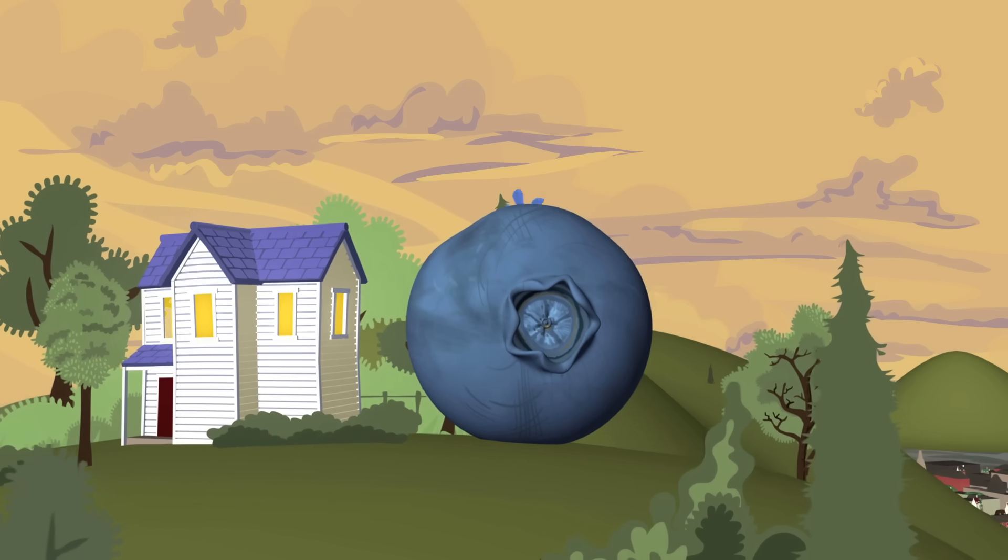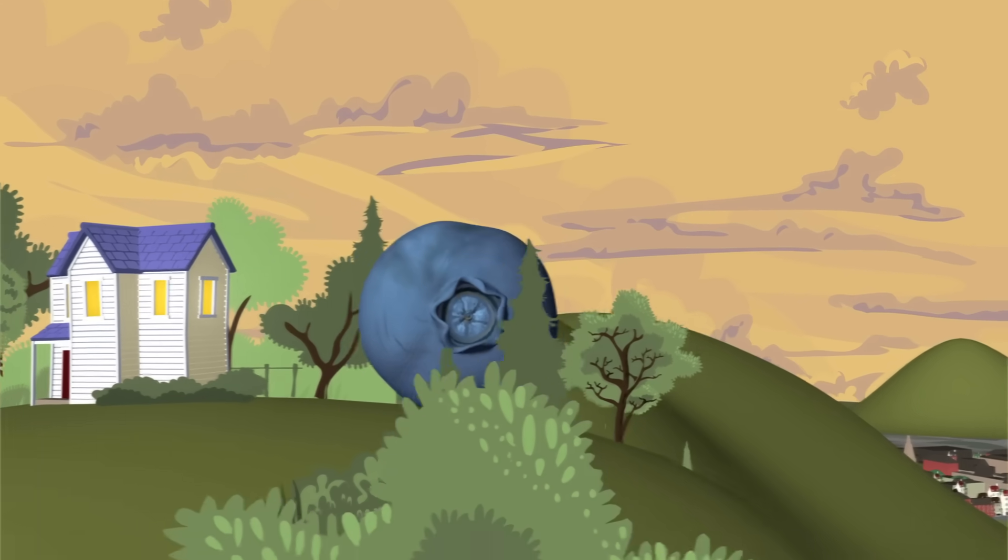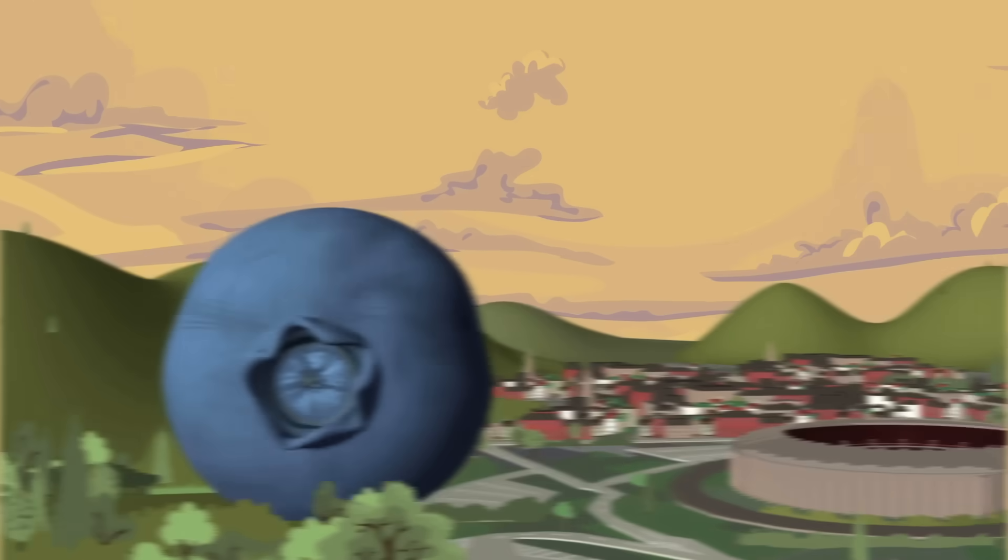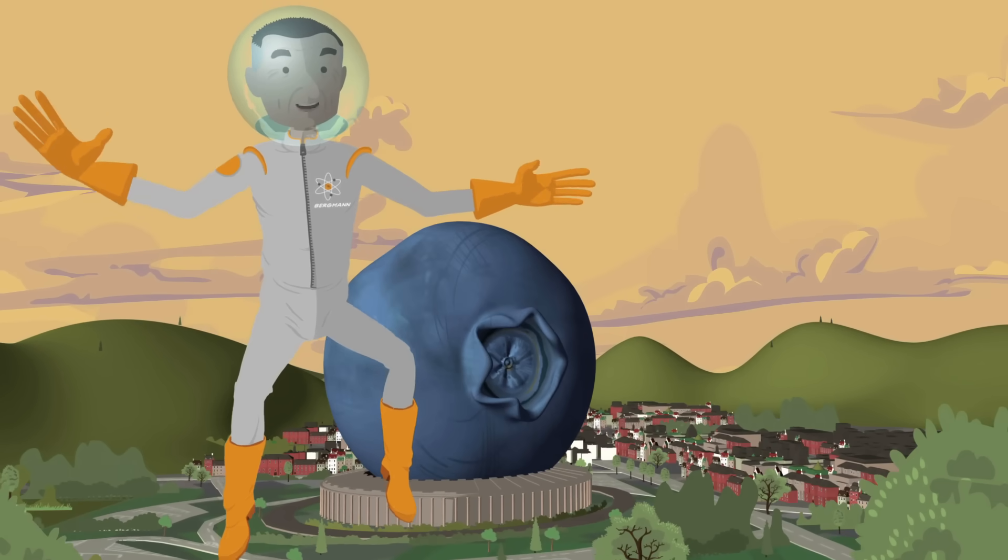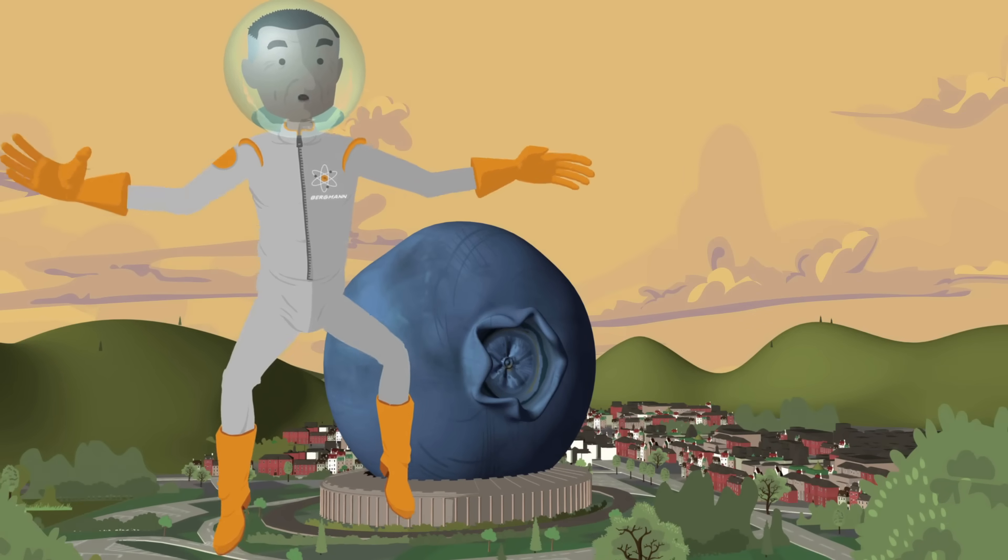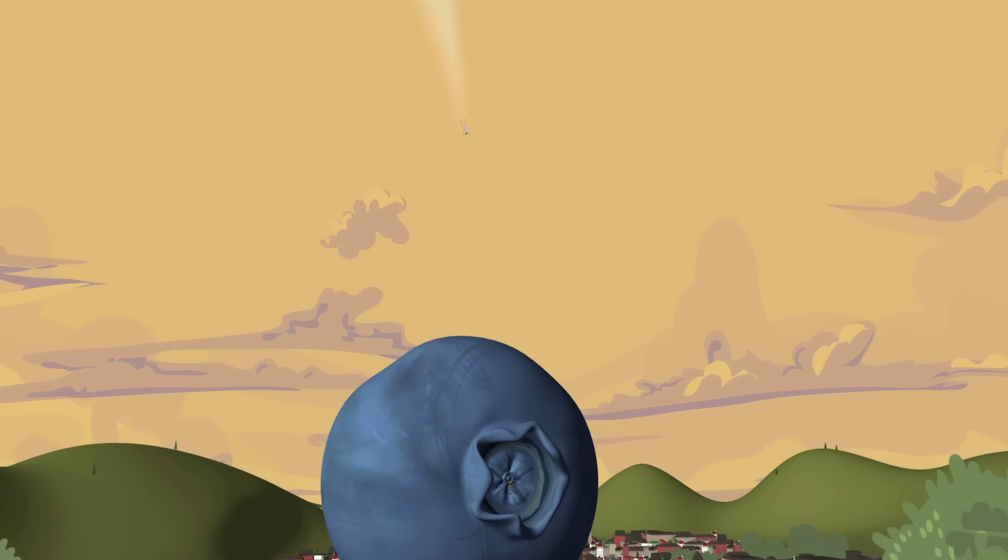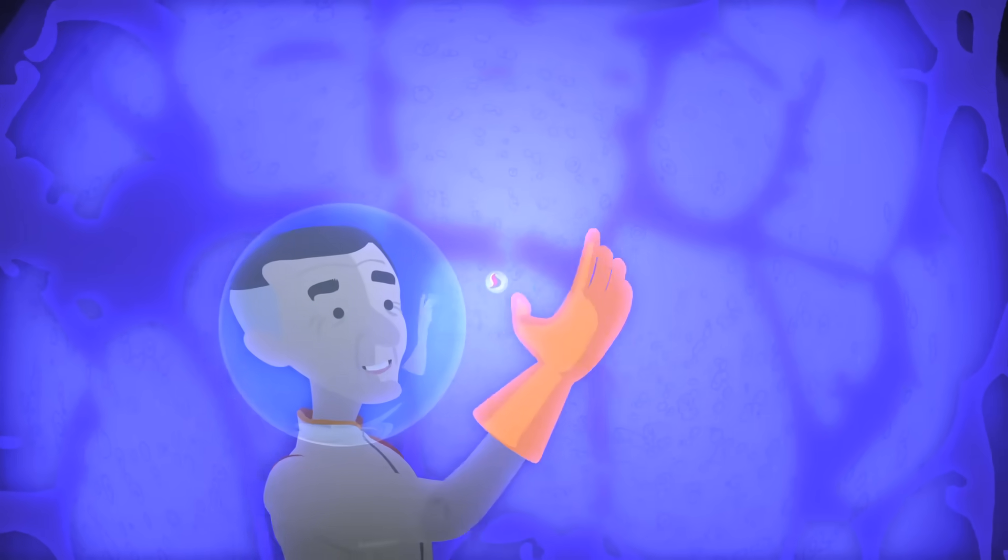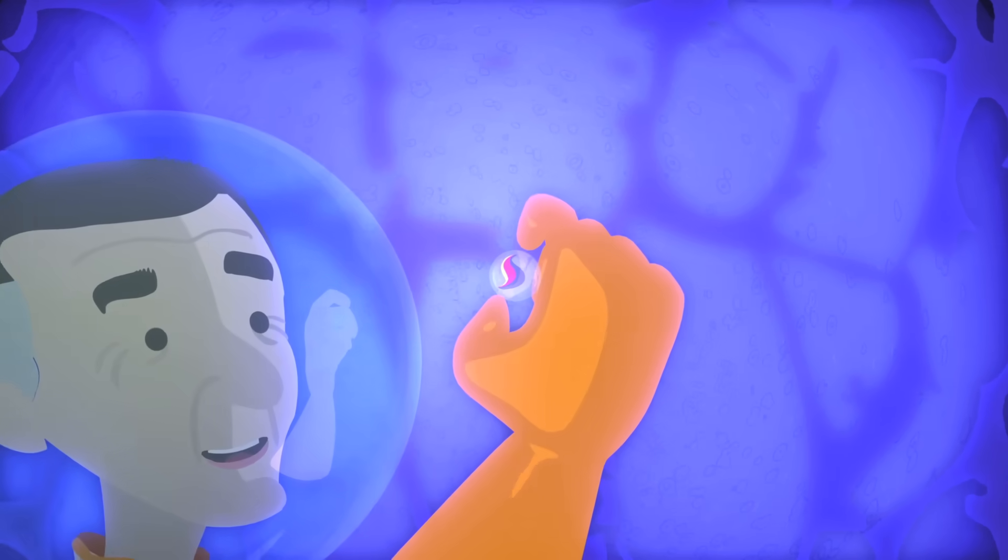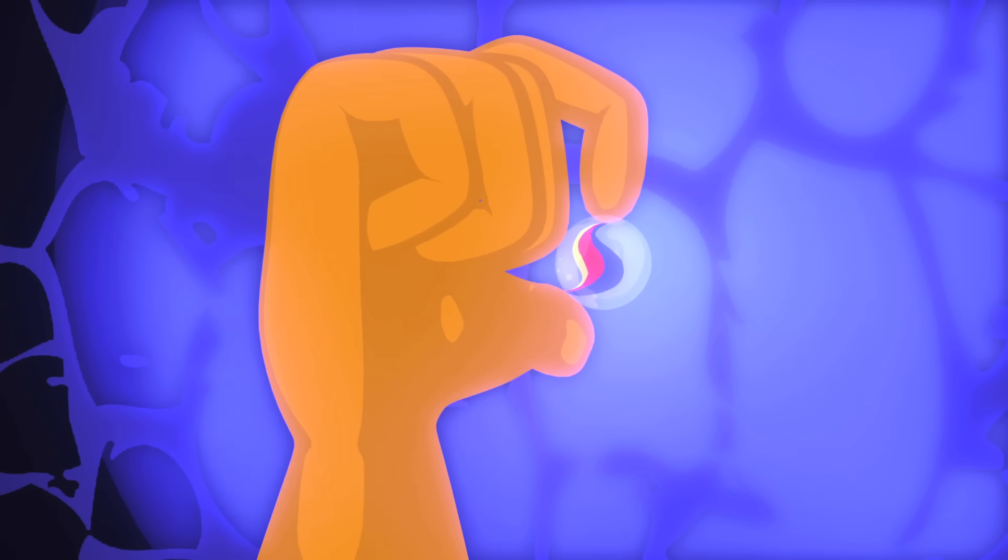So to get our minds wrapped around how big the nucleus is, we need to blow up the blueberry up to the size of a football stadium. So imagine a ball the size of a football stadium. And right smack dab in the center of the atom, you would find the nucleus. And you could see it. And it would be the size of a small marble.